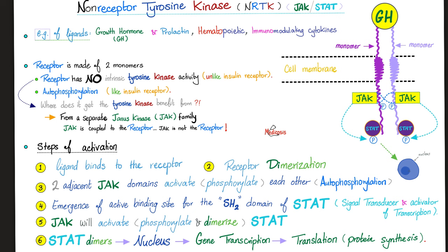Now let's activate. The ligand — growth hormone, prolactin, erythropoietin, thrombopoietin, etc. — comes and binds to the receptor. The receptor was made of a monomer and a monomer; when the hormone binds, these monomers dimerize. This receptor is dependent — dependent on JAK. Two adjacent JAKs activate each other through autophosphorylation: this one phosphorylates that one, and that one phosphorylates this one. After phosphorylating each other, they also phosphorylate a binding site for STAT. STAT stands for Signal Transducer and Activator of Transcription.